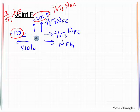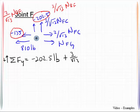Let's make sure you know where those came from. This one was found by computing 3 over the square root of 13 NBF. And this one was found by computing 2 over the square root of 13 NBF. Now we can run equilibrium equations. I'll sum forces in the y direction.